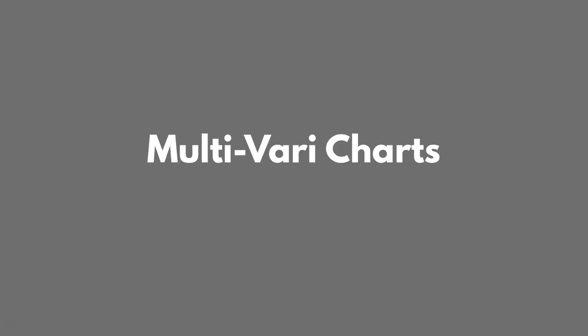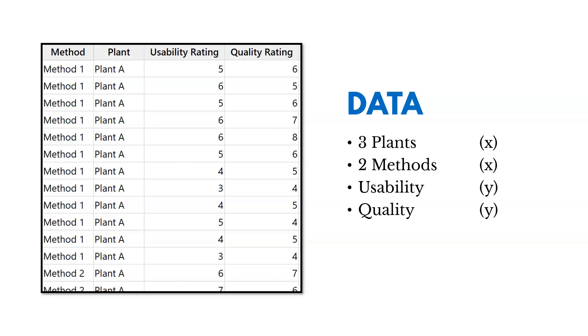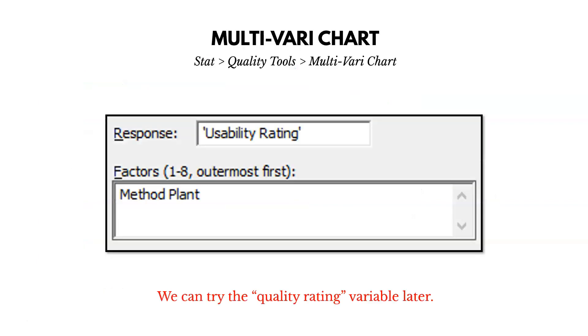That's the whole goal. Now let's start generating some multivariate charts. Let's use a scenario involving car locks — we manufacture car locks and want to assess how different manufacturing plants and methods affect usability and quality of our door locks. Usability is about how easy it is to use and unlock the door; quality is about how long it lasts. We gather data on usability and quality ratings using three plants — A, B, and C — and two manufacturing methods — method one and method two. The plants and methods are our inputs; usability and quality ratings are our outputs. In Minitab, we use the multivariate chart feature, listing usability rating as the response and method and plant as the factors.